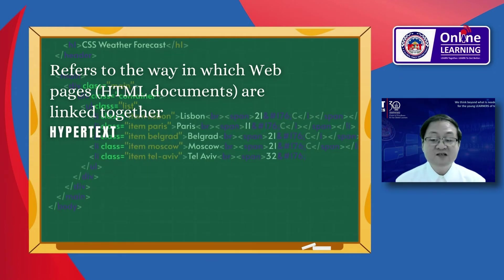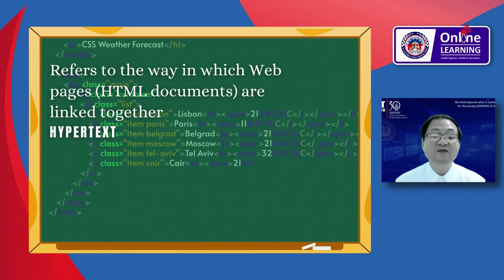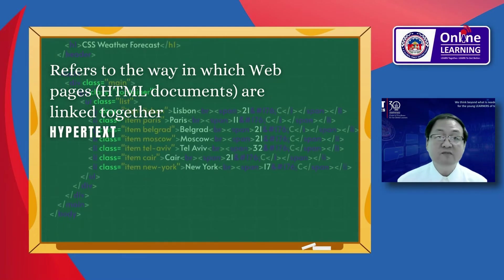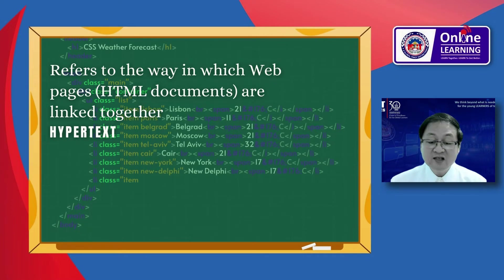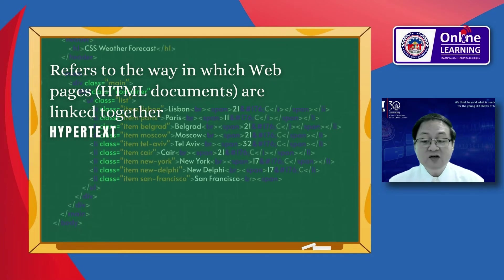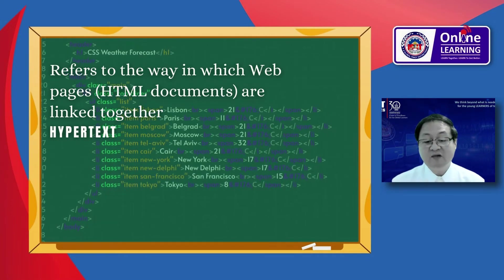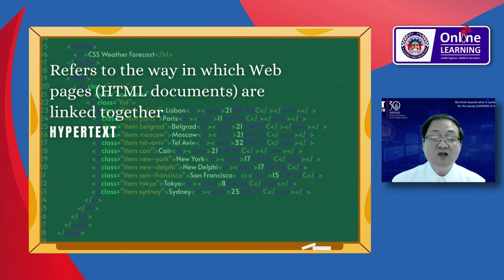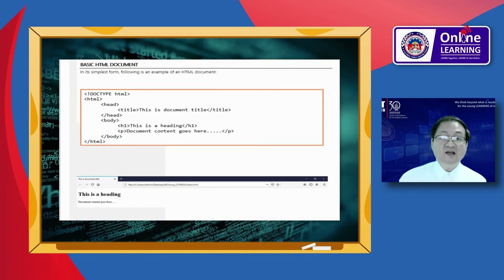Originally, HTML was developed with the intent of defining the structure of documents like headings, paragraphs, lists, and so forth, to facilitate the sharing of scientific information between researchers. Now HTML is being widely used to format web pages with the help of different tags available in the HTML language.